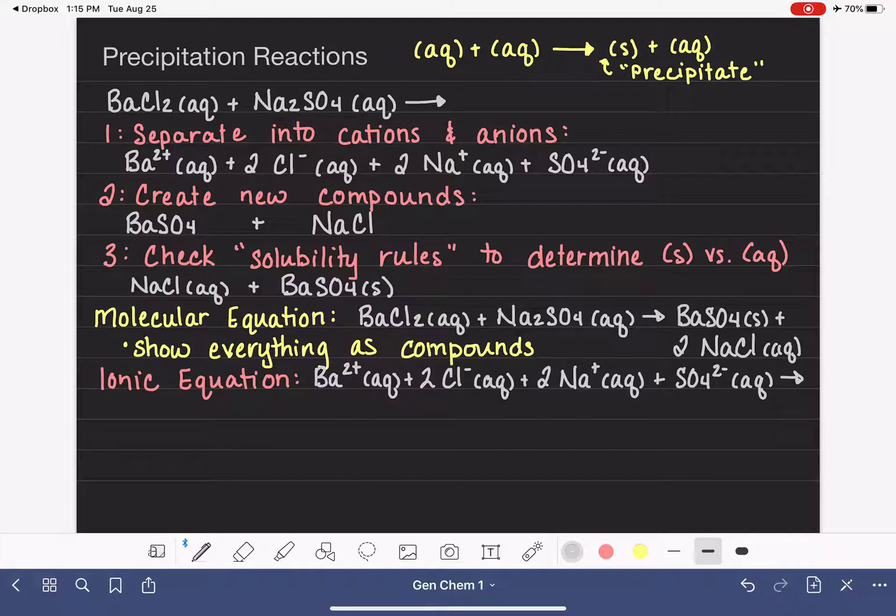And then for the products, the barium sulfate, because it's a solid, not aqueous, I'm going to write that as a solid. Actually, I'm going to move that over a little bit, give myself some more room. BaSO4, solid. And then the sodium ions and the chloride ions, because they are aqueous, I'm going to write them as cations and anions. So again, the molecular equation, this is one that shows the aqueous compounds as ions.